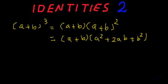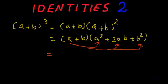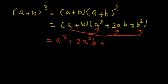Now let's follow the steps of multiplication. We'll take 'a' first and multiply it to all the terms. So we get: a multiplied by a squared is a cubed, a multiplied by 2ab gives plus 2a squared b, and a multiplied by b squared gives plus ab squared.